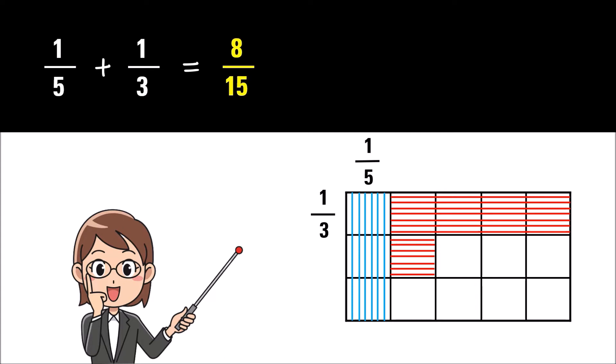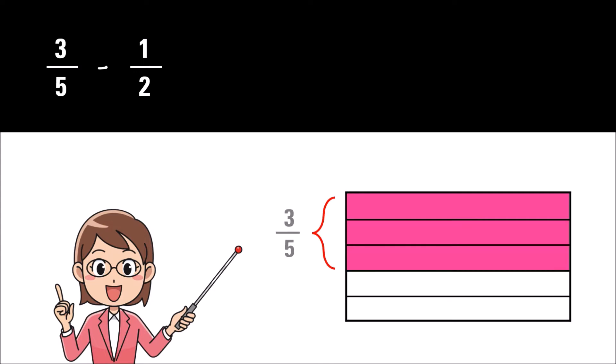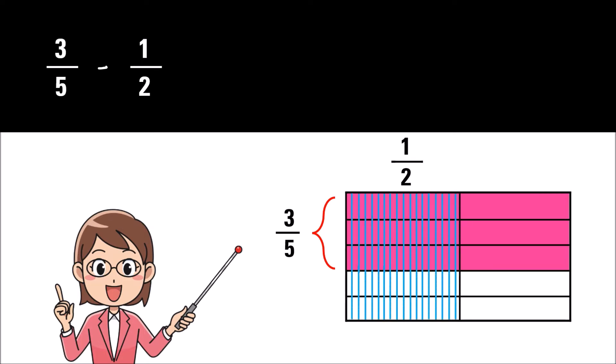So by counting the boxes, the answer of one-fifth plus one-third will be eight-fifteenths. Now to subtract one-half from three-fifths, the fraction three-fifths can be shown using three rows colored pink among five rows shown.